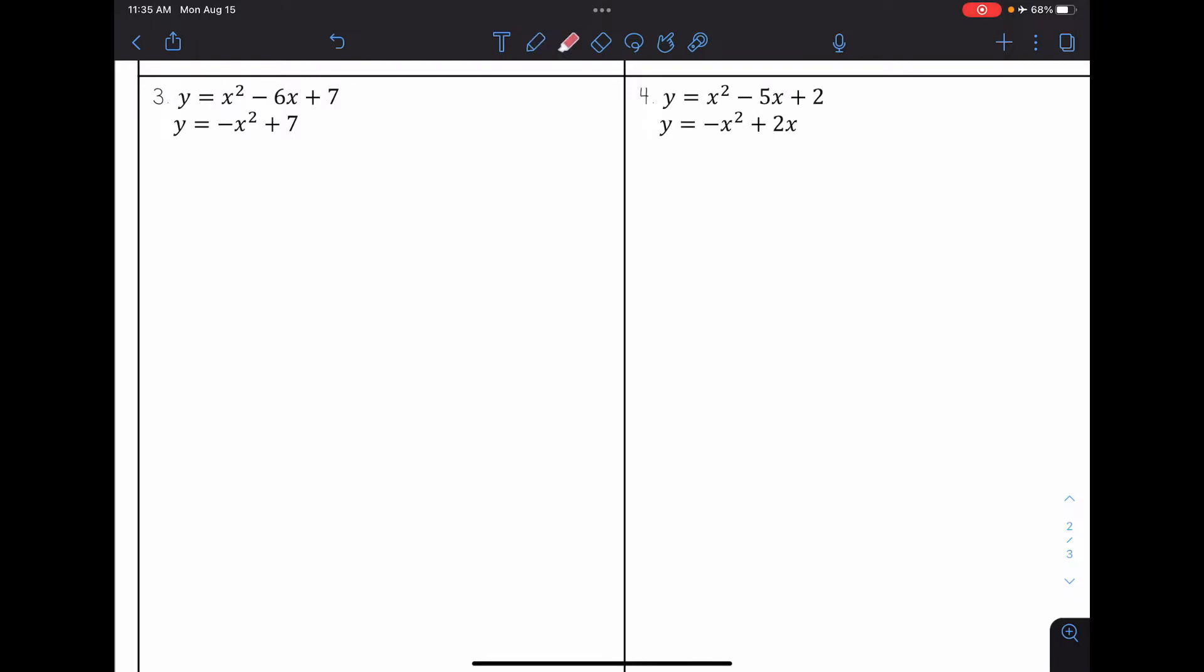So here, again, I see they're both equal to y, so I can set these equal to each other. And so I have x squared minus 6x plus 7 is equal to negative x squared plus 7.